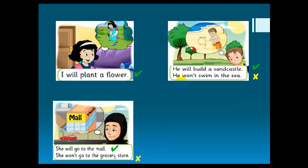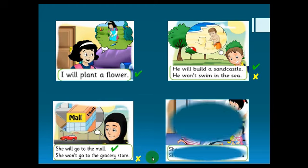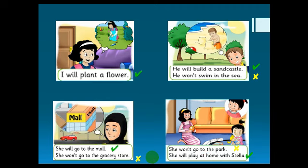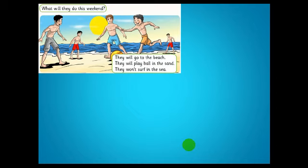Another example: look at this woman, this mom. She will go to the mall, but she won't go to the grocery store. So we put a check and a cross. Another example: this girl won't go to the park - she will not go to the park - but she will play at home with Stella, meaning she will stay at home with her sister. I hope you understand how to use 'will' and 'won't' correctly.